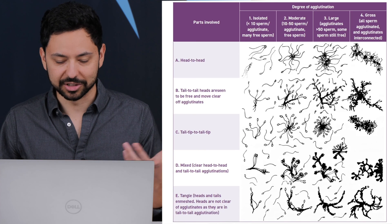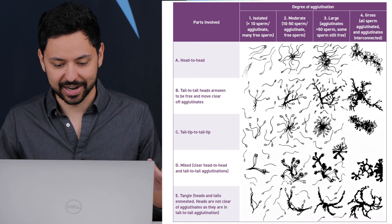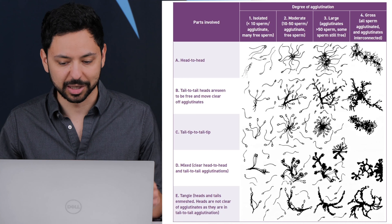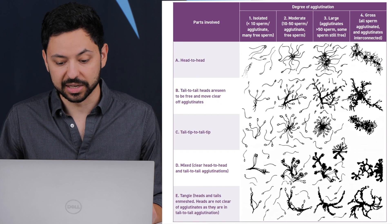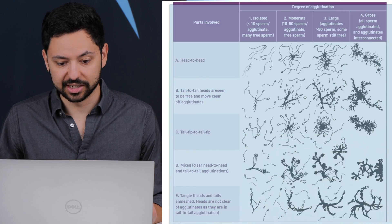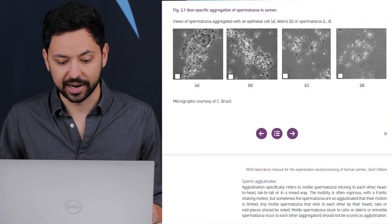And if you have a significant amount of sperm that just can't move around or stuck together, obviously they're not gonna be able to fertilize anything. So you can also do an assessment based on this chart and in this section that goes over how to actually graph that and determine that.